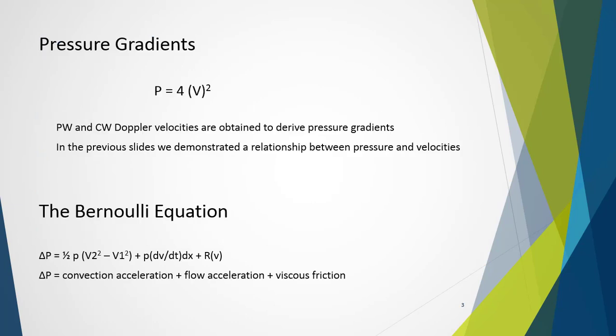One of the simplest applications of pulse wave and continuous wave Doppler is the use of velocities obtained to derive pressure gradients between two chambers of the heart. This comes about through the Bernoulli equation. A change in pressure is equal to the sum of convective acceleration, flow acceleration, and viscous friction.